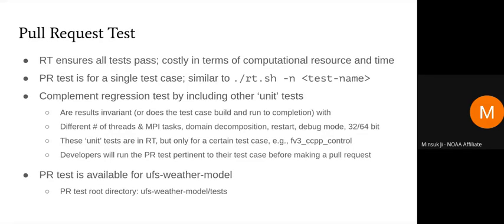I'd like to talk about what we call the full request test or PR test, a feature recently implemented in the weather model. Whereas the full regression test is very costly in terms of computational resources and time, the PR test only runs a single test — similar to running rt.sh with the minus n flag — but the difference is that it has many other so-called unit tests.